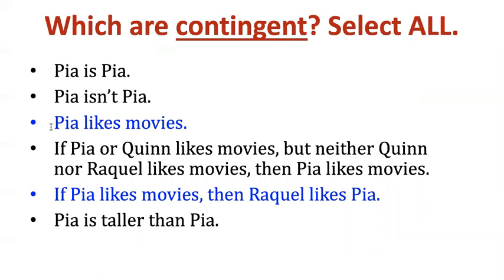Which sentences are contingent? 'Pia likes movies' — maybe it's true that Pia likes movies, but the world could have been different and Pia didn't like movies. Or consider 'If Pia likes movies, then Raquel likes Pia.' That might be true if Raquel loves everybody who loves movies, but that doesn't mean it's a law of logic that Raquel is like that. There's nothing about the structure of this sentence that guarantees it is necessarily true. So both of those are contingent.